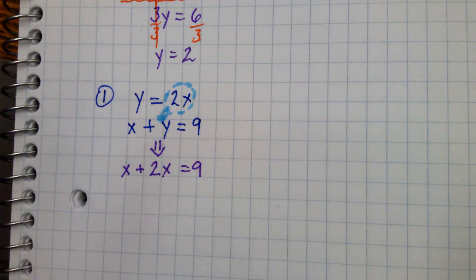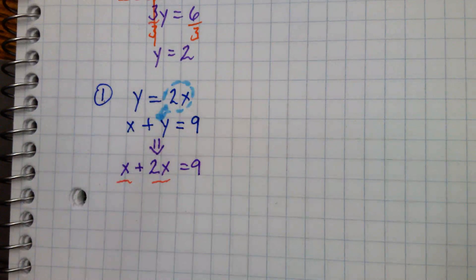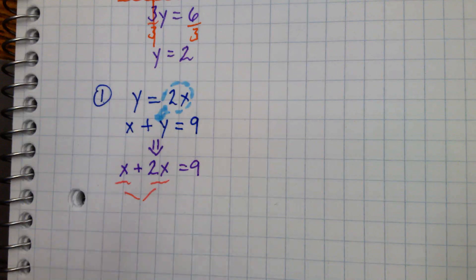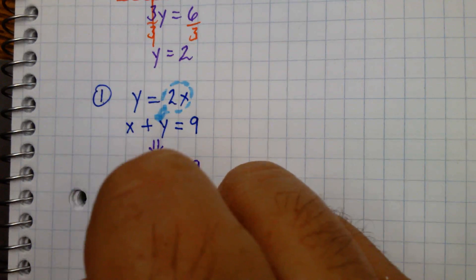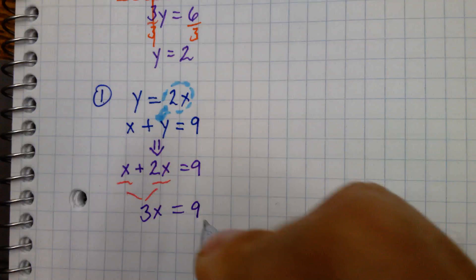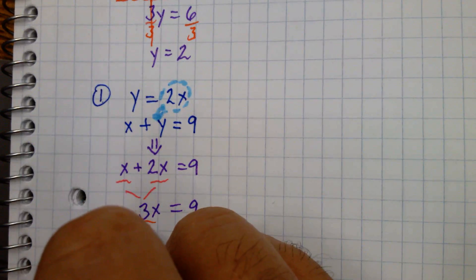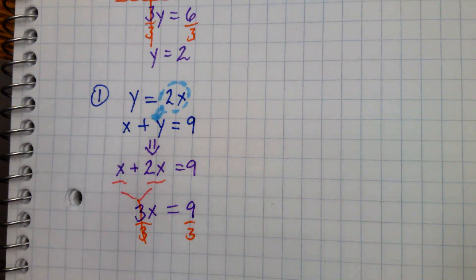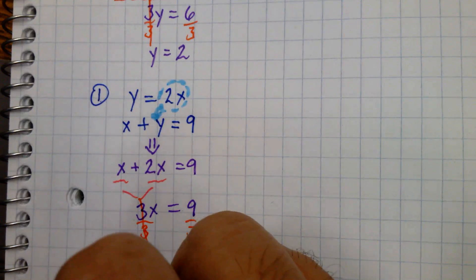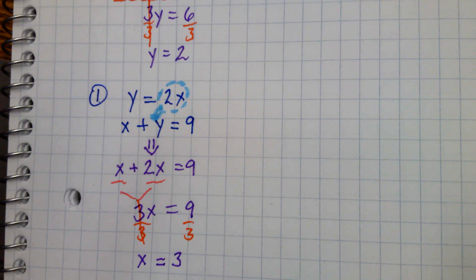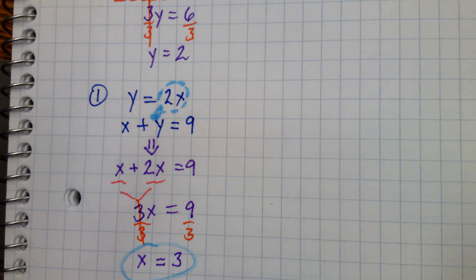We rewrite the equation as x plus 2x equals 9. The advantage is we only have x's now. Combining like terms: x plus 2x equals 3x, so 3x equals 9. Dividing by 3, we get x equals 3. That's the first half of our answer.